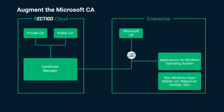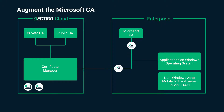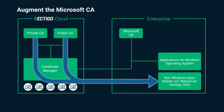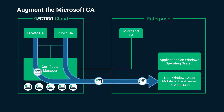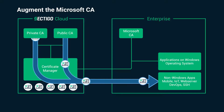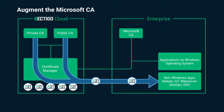Sectigo's Certificate Manager continuously discovers certificates issued by the Microsoft CA and records them for reporting and notifications. In addition, Microsoft delegates the issuance to its subordinate CA hosted by Sectigo. By utilizing a Sectigo-issuing CA, the certificates are 100% automatically installed using industry standard protocols.